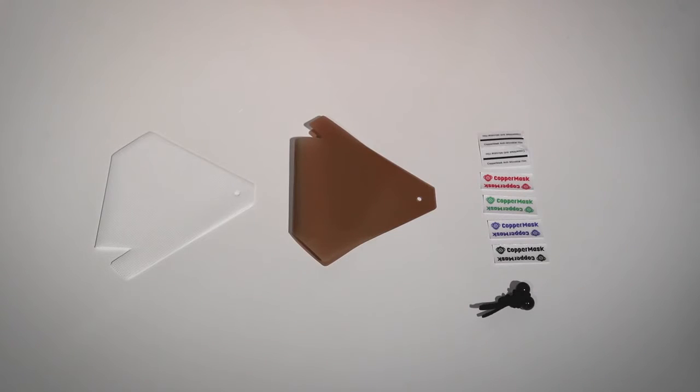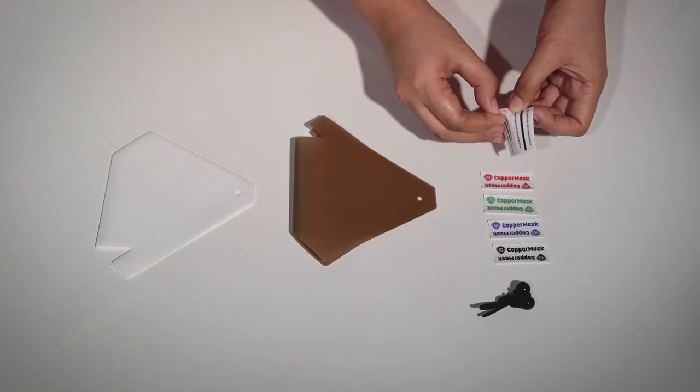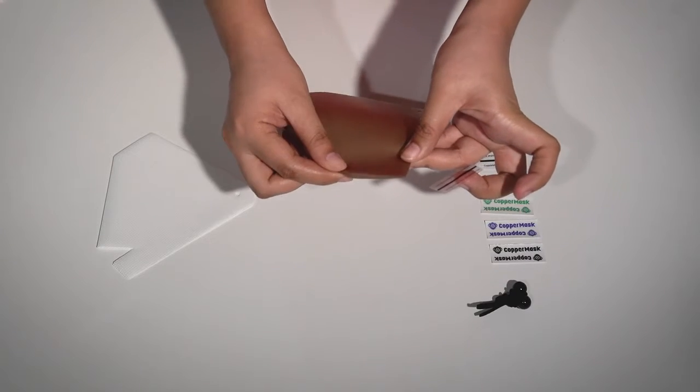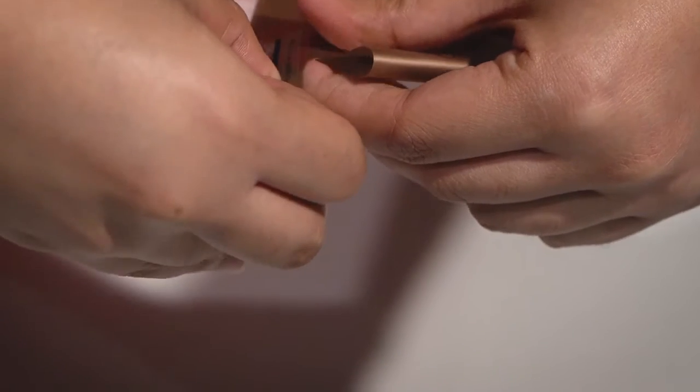Now, let's assemble it. For our new and improved Copper Mask, we will show you how to put the stickers first. Fold the Copper Mask in half. Make sure it's aligned. Then put the seal sticker on the upper part and also on the bottom part.